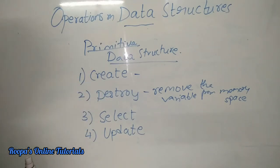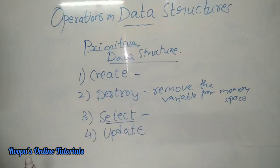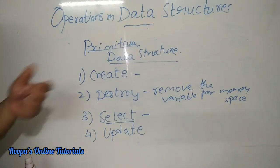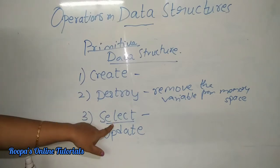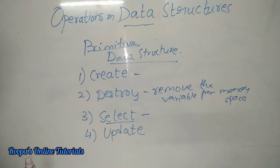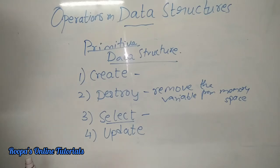The next operation we can do is select. What is selection? It's a common word — you select books or you select the dress that you like. So select means you are choosing something. Here, select is used by programmers to access data within the data structure. If a user wants to access some particular data, that operation is known as select.